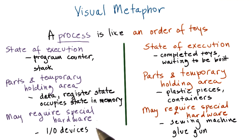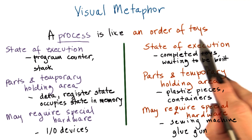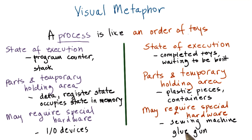The operating system has to manage these devices and control which of the processes that are perhaps executing concurrently at the same time gets access to which hardware components. This is similar to what would happen in a toy shop, where the toy shop manager has to control how special hardware like the sewing machine or the glue gun are used — which particular order of toys gets to be assigned the usage of these designated hardware components.